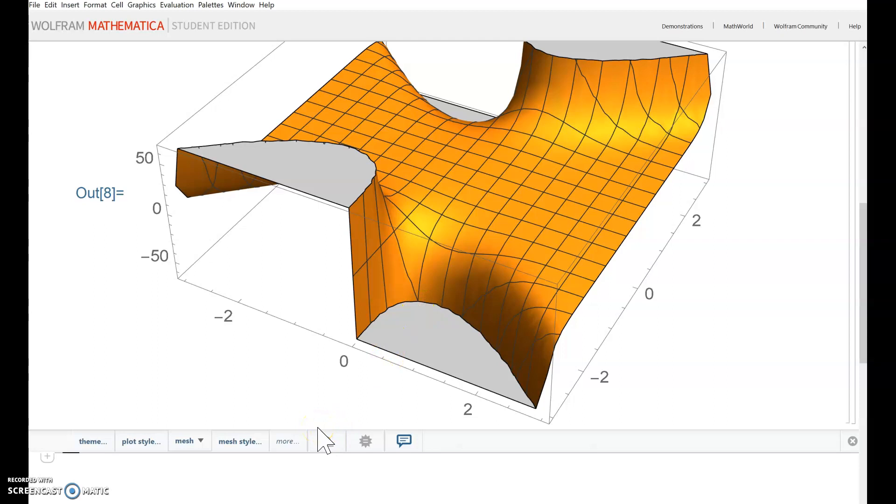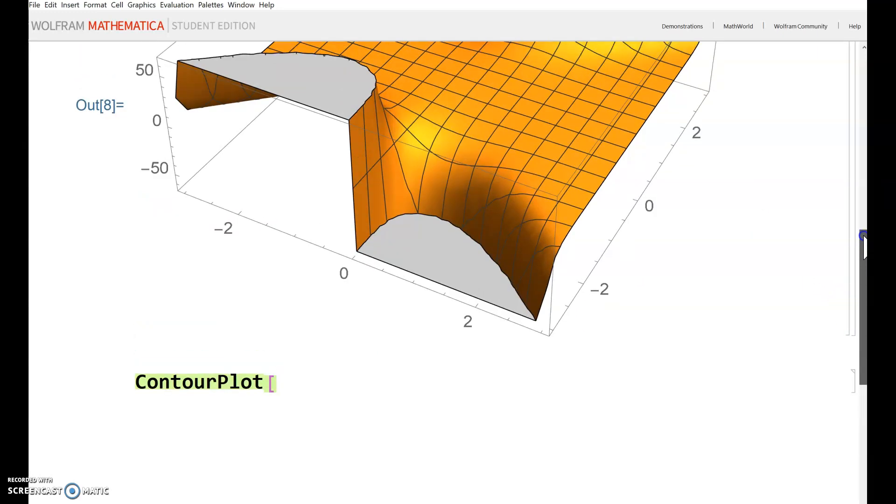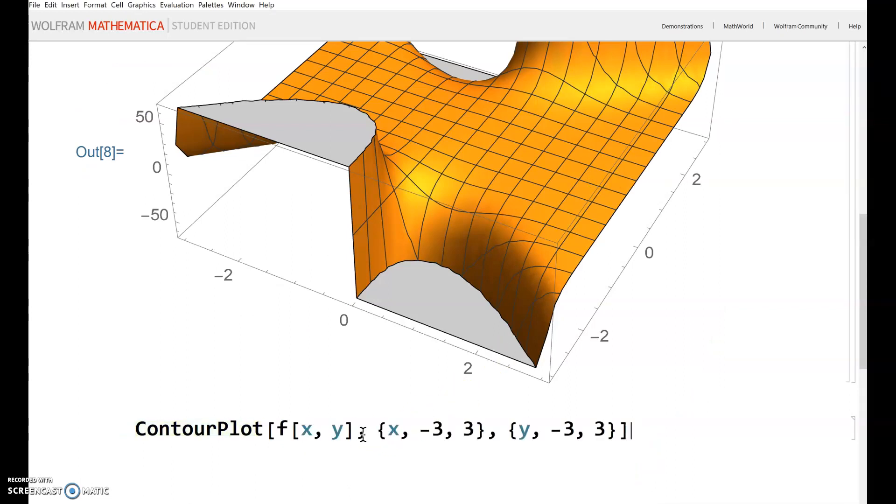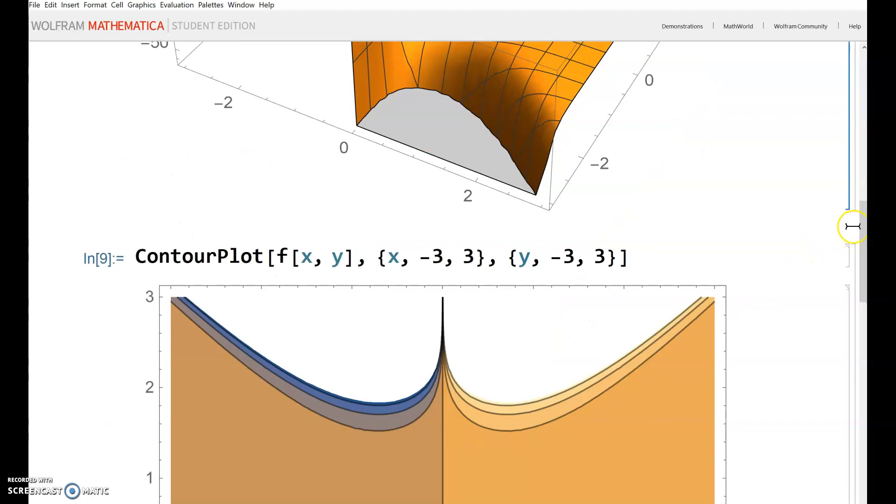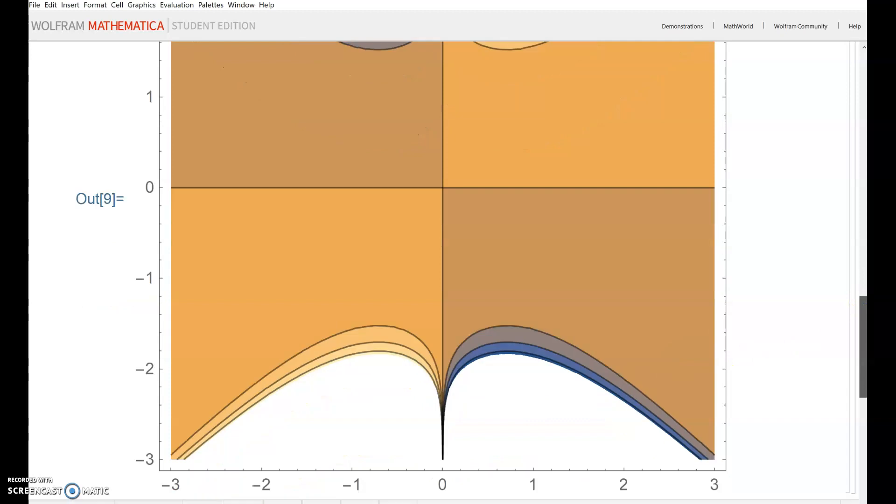Let's also do a contour plot. I'll copy and paste since the commands are similar to Plot3D. Just like the 3D plot, we have a roughly flat area in the middle, then rising very quickly here—20, 40, 60—and falling very quickly to negative 20, negative 40, negative 60 in that direction. Same pattern for negative y values.